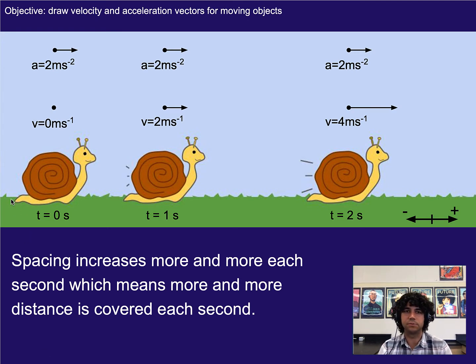Now, before we'd looked at some snapshot diagrams of things like snails, where we could tell something was speeding up based on the spacing between each snapshot. Well, that spacing also can tell us that literally with each second that goes by, the snail is going to cover more distance each second.